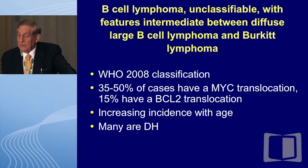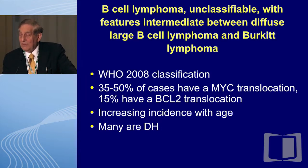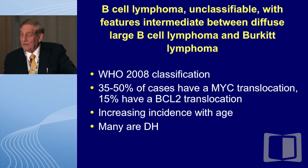Let's talk a little bit about pathology. There is an unclassifiable B-cell lymphoma according to the WHO classification in 2008, with features intermediate between diffuse large cell and Burkitt's lymphoma. You see this in an increasing incidence with age. Many of these are double hit, and between 35 and 50% have the MYC translocation, and 15% also have a BCL2 translocation. So when you see these unclassifiable high-grade B-cell lymphomas between diffuse large cell and Burkitt's, look for a double hit.